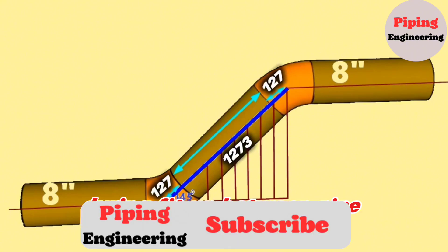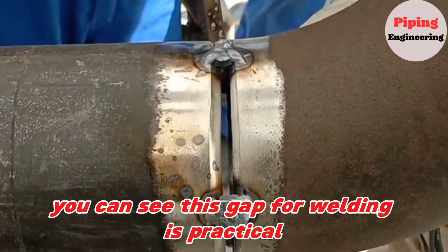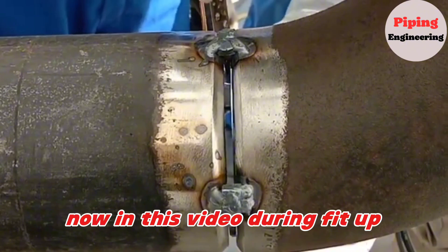During fit-up, between pipe fittings should be a gap of approximately 3 millimeters for welding. You can see this gap for welding as practical now in this video.